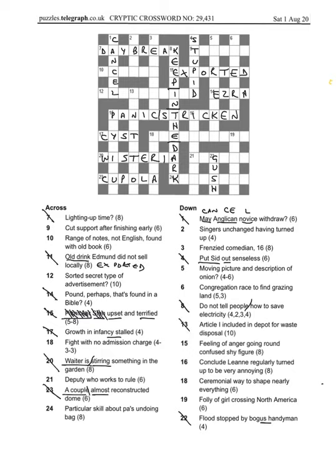13 down, article I included in depot. So the depot I think is going to be station here, and then the article is going to be AN, and then I included. And that gives us waste disposal, or sanitation, 13 down. And then five down, again we've got a K in here. Moving picture and description of onion, it's going to be tearjerker. That's the type of film isn't it, and obviously if you chop onions it can make you cry.